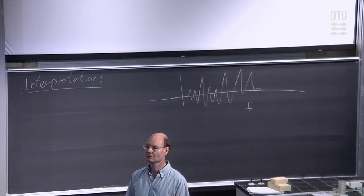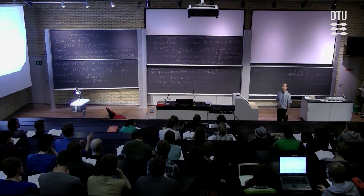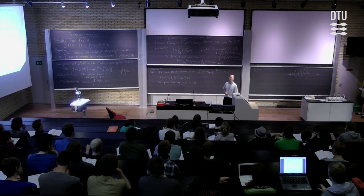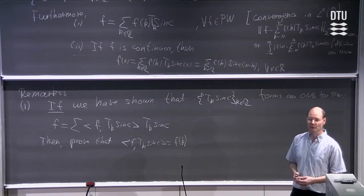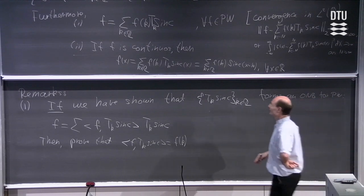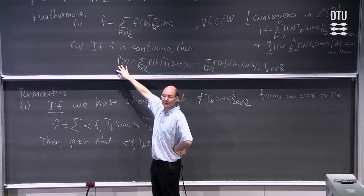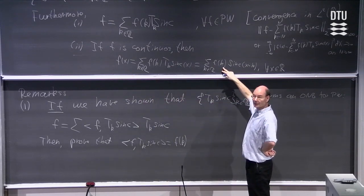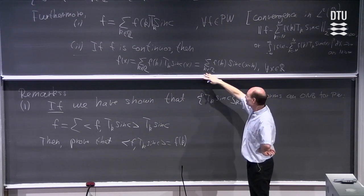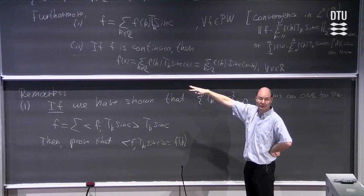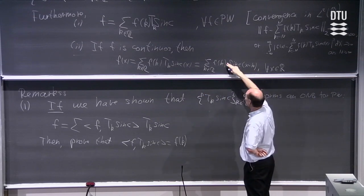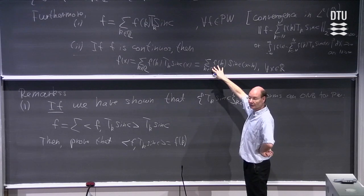It is surprising that we have a sum and not an integration, because it means we only look at some of the function values for f, and a lot of information won't be used at all. This is very surprising — what we are saying here is we can recover all function values f(x), but we only use the information f(k). If you just know the values f(k), you can put them into this formula and reconstruct all values f(x), because sinc(x − k) is a known function. All information about f is collected in these sampled values.